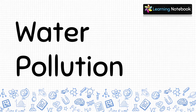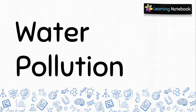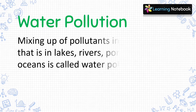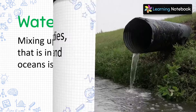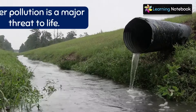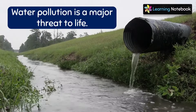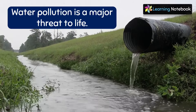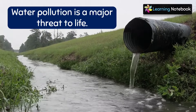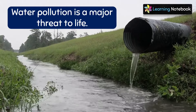Now let's understand water pollution. Mixing up of pollutants in water bodies like lakes, rivers, ponds, seas and oceans is called water pollution. Water pollution is a major threat to life. It badly affects marine life like fishes, crabs, octopus, tortoise, etc.